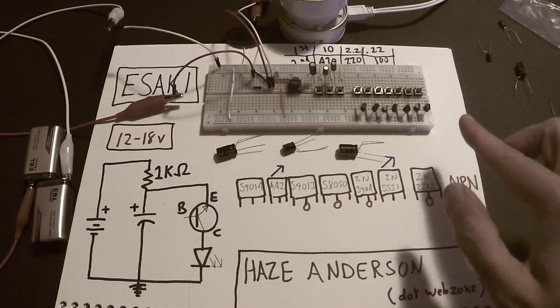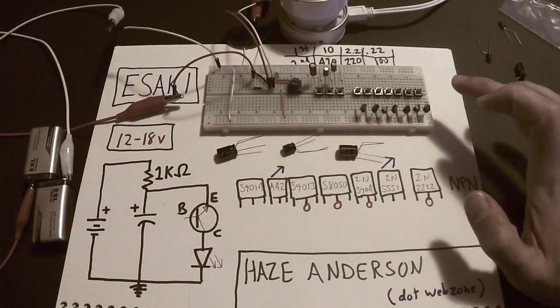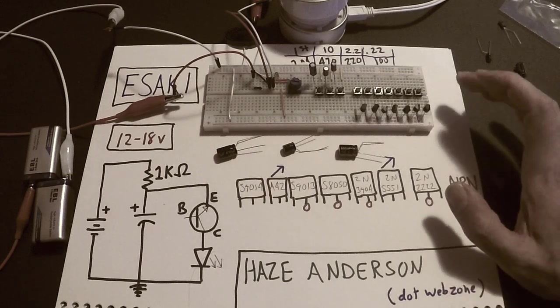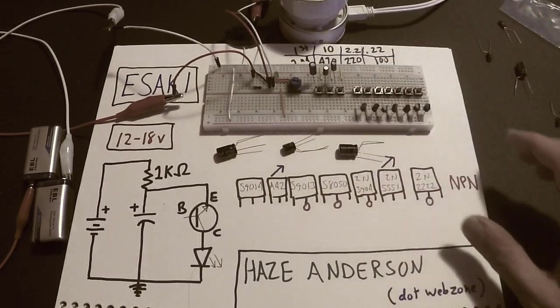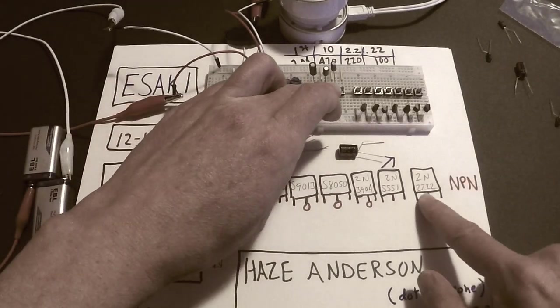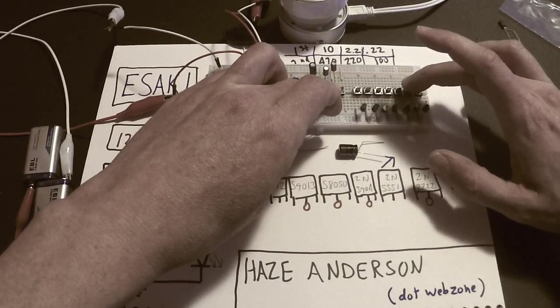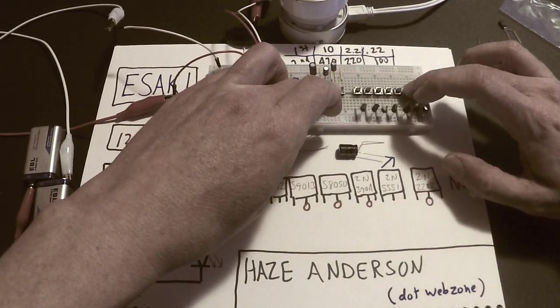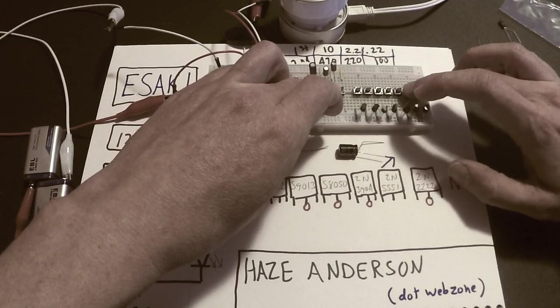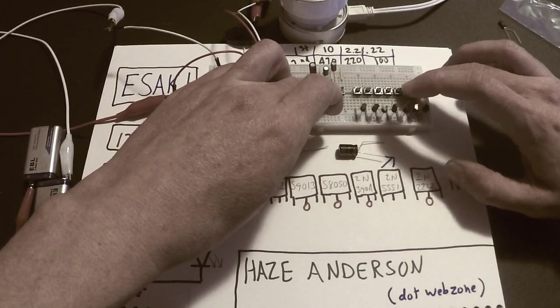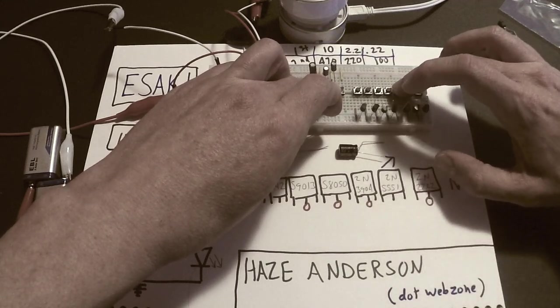Well for this to work you do not use the middle leg on the transistor which is the base. What I found is that some of these transistors are very unstable if you touch the base. So for example the 2N222 but the 2N5551 is very stable. When I touch the base on it it doesn't change.